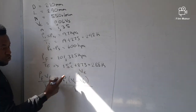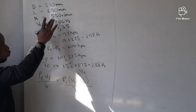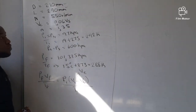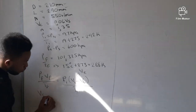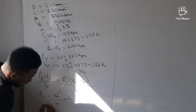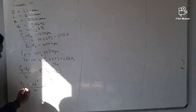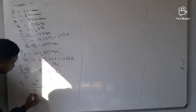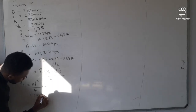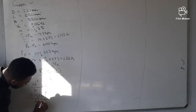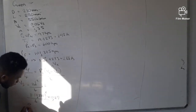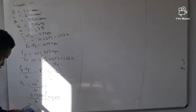To find the effective volume, we start by calculating the swept volume Vs. We use the formula Vs = (π × D²) / 4 × L. Converting to meters: D = 0.210 m and L = 0.290 m. So Vs = π × (0.210)² / 4 × 0.290.